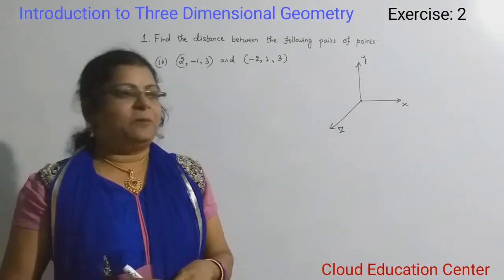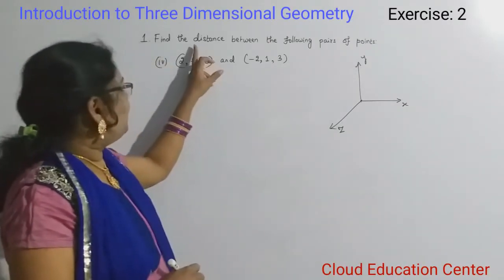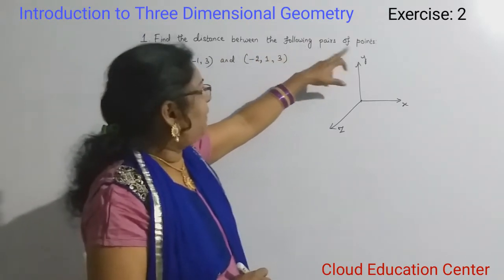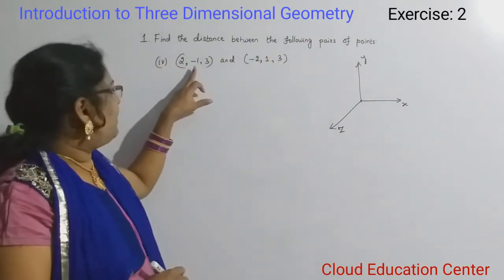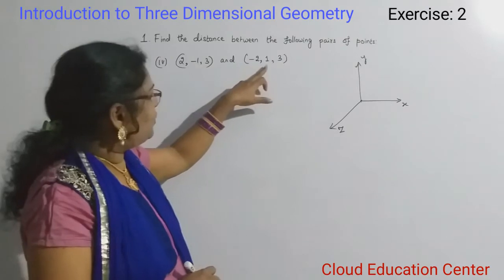Hello everyone, we will solve the next problem. In this problem, they are asking us to find the distance between the following pair of points. They are given (2, -1, 3) and (-2, 1, 3).